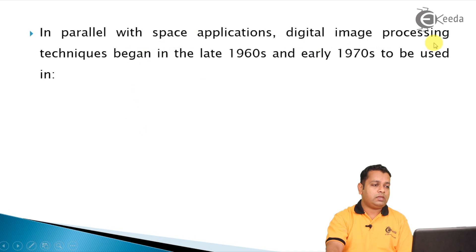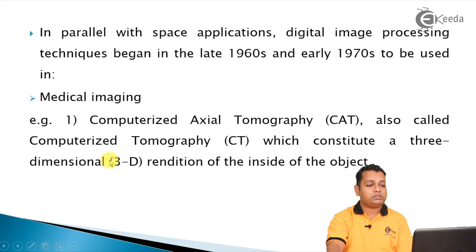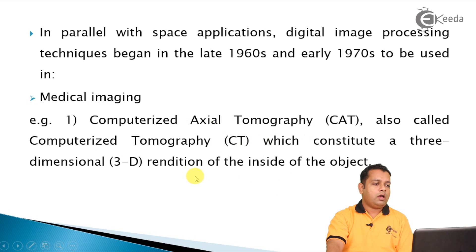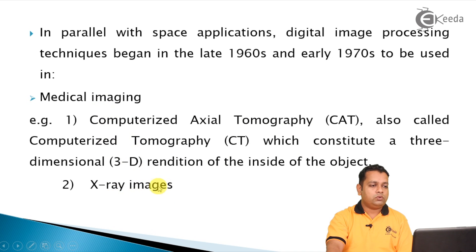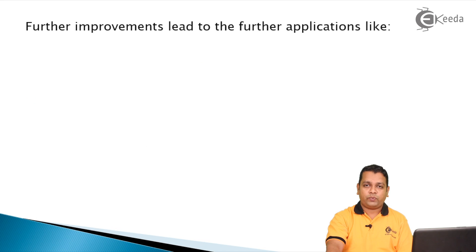In parallel with space program applications, digital image processing also advanced in the field of medical imaging. A very popular application is the CT scan — Computerized Axial Tomography, also abbreviated as CAT or CT for Computerized Tomography — which constitutes a three-dimensional rendition of the inside of the object being imaged. X-ray imaging is another widely used medical imaging application. These represent key milestones in the origins of digital image processing.